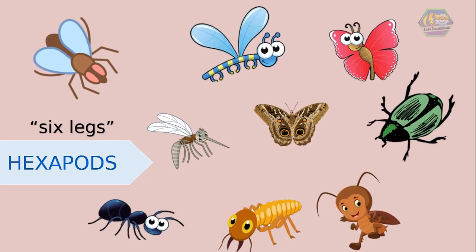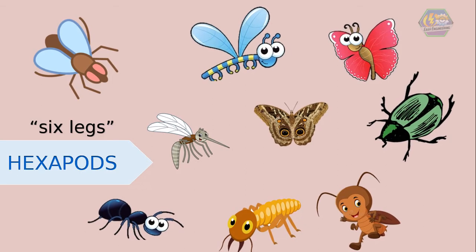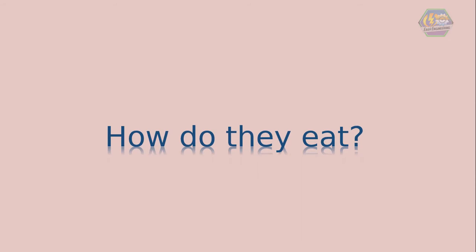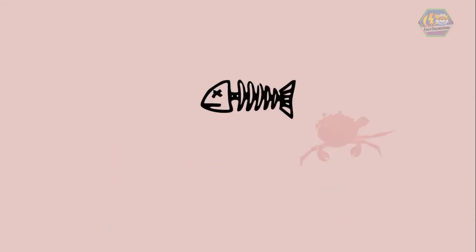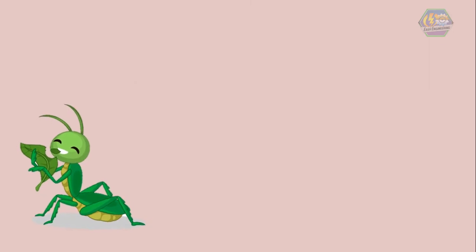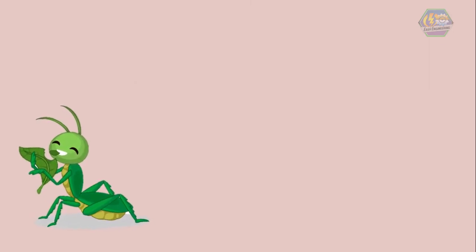So how do arthropods eat? Arthropods eat many different kinds of food. Some eat plants like the locusts, but some eat other animals like the praying mantis. They eat anything that moves.